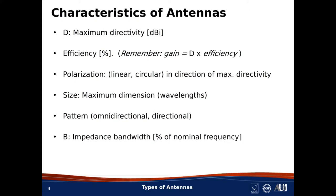Next is size. Antennas come in all different shapes, so I'll refer to the maximum dimension of the antenna, given in units of wavelengths so everything is frequency-independent. Next is pattern. All patterns can be classified as either omnidirectional or directional. Omnidirectional means constant in one plane — for example, the dipole. Since we're talking about physically realizable antennas, isotropic is not a pattern we'll encounter.